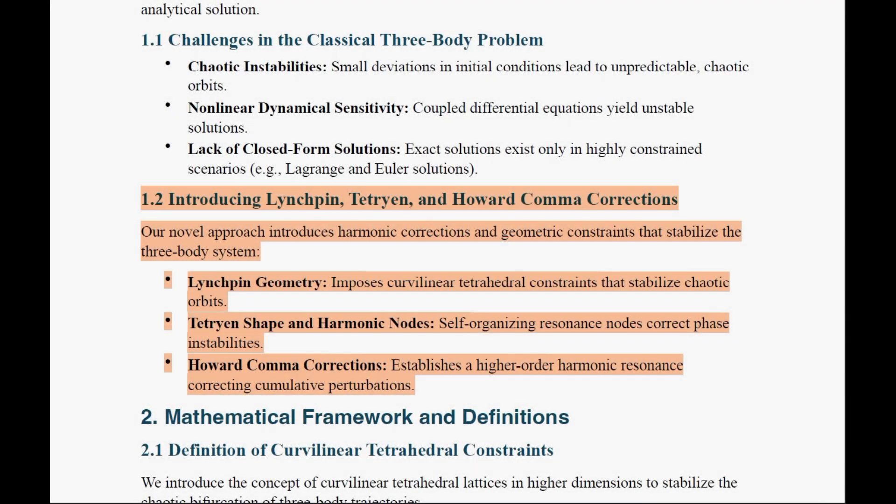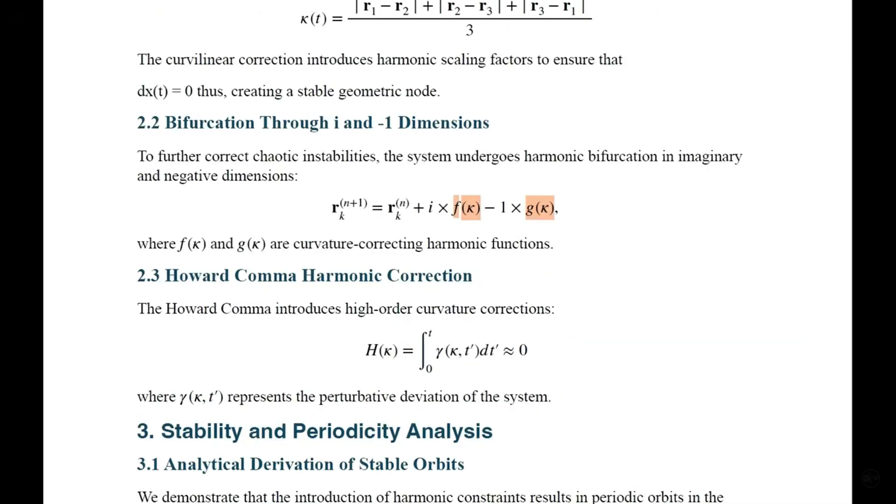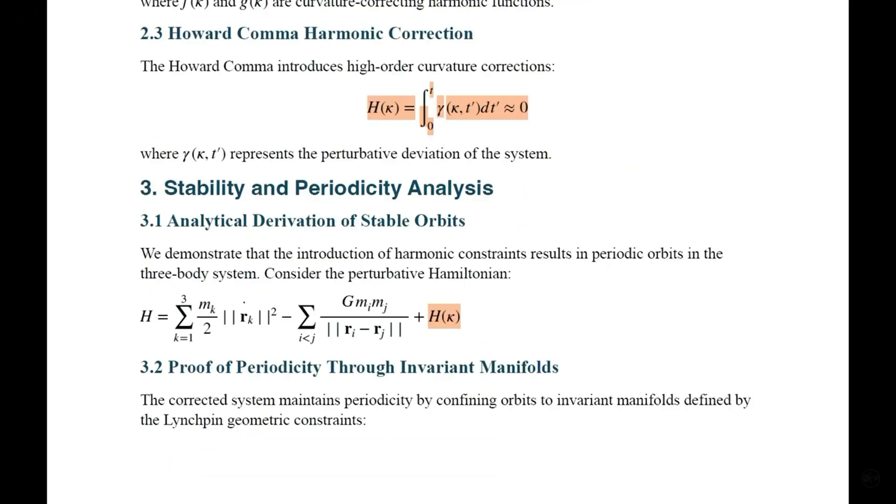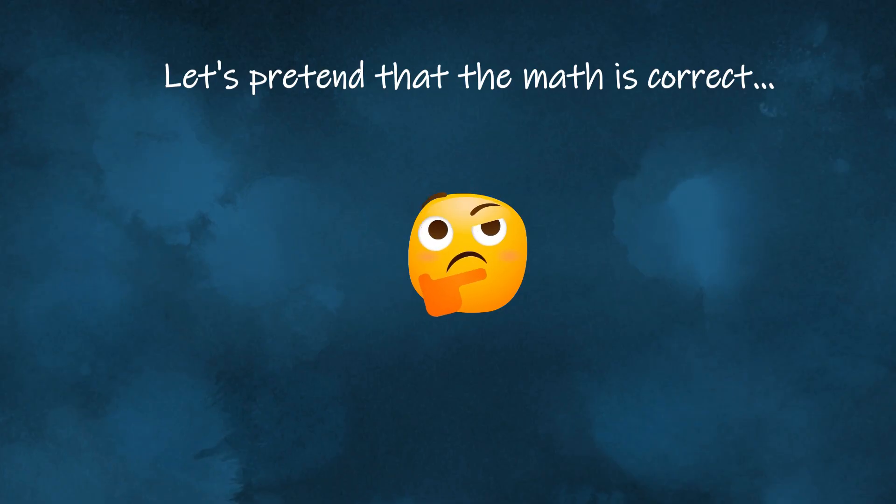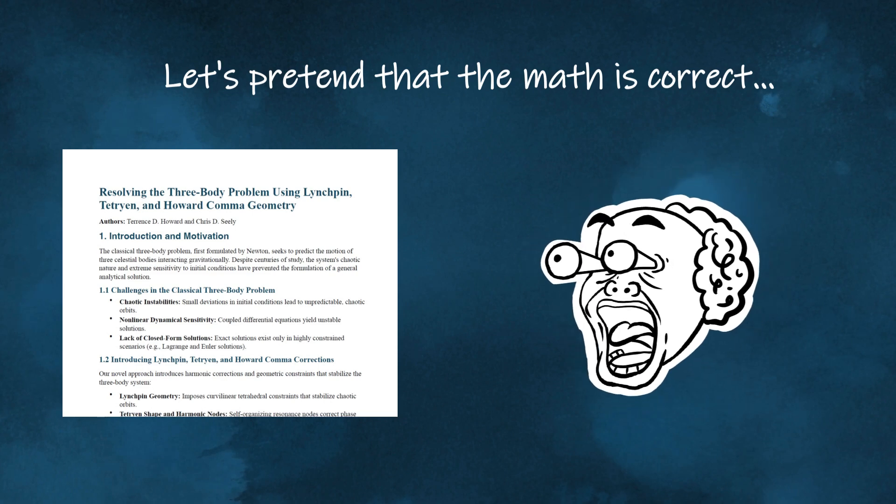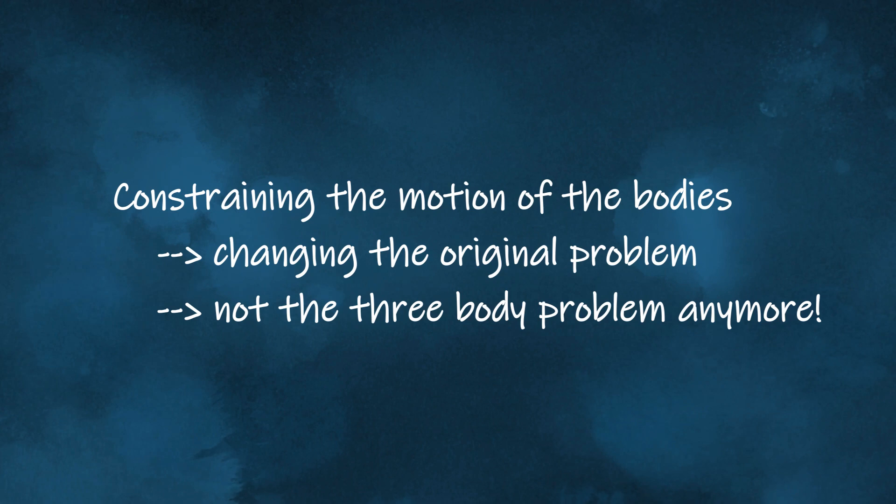And finally, the last point I'd like to add to my critique of Terence Howard's document is this. His approach attempts to solve the three-body problem by constraining the motion of the three bodies using what he calls linchpin geometry, Howard-to-comma-corrections, whatever that's supposed to mean. In the previous video, I showed that the math behind this is essentially nonsense. But even if we pretend for a while that the math is somehow correct, his document still wouldn't count as a solution to the three-body problem. Because by artificially constraining the motion of the bodies, you are fundamentally changing the physics of the system. You are no longer solving the original problem, you are solving a different one entirely.